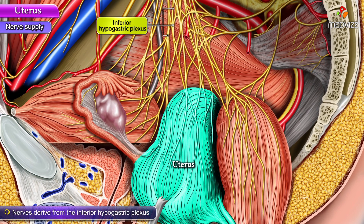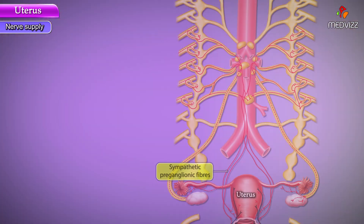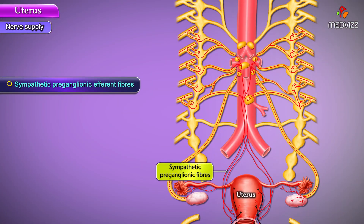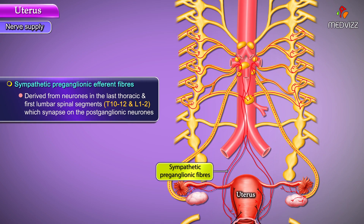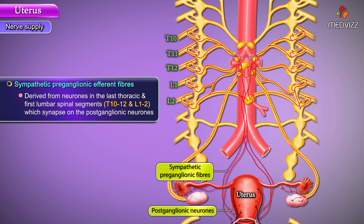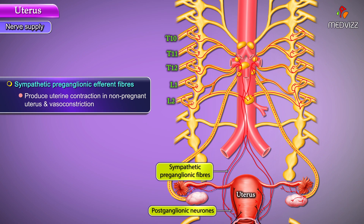Innervation: the nerves are derived from the inferior hypogastric plexus. Sympathetic preganglionic efferent fibers are derived from the neurons in the last thoracic and first lumbar spinal segments T10 to T12 and L1 to L2, which synapse on the postganglionic neurons. These fibers produce uterine contraction in the non-pregnant uterus and vasoconstriction.